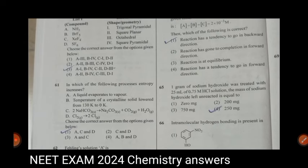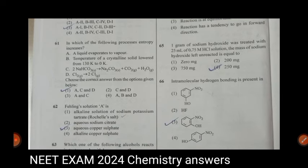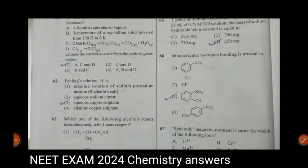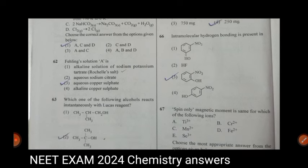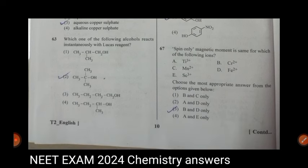This is the correct answer. In 65th, answer is 250 mg, answer is fourth. In 66th, intramolecular hydrogen bonding is present in third. Spin-only magnetic movement is same for which of the following ions, there are B and D only, answer is third.